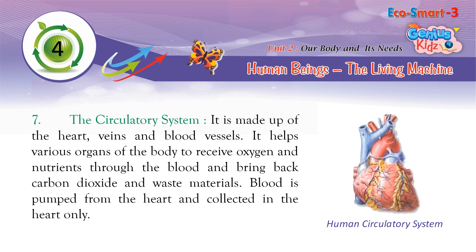The Circulatory System is made up of the heart, veins, and blood vessels. It helps various organs of the body receive oxygen and nutrients through the blood and brings back carbon dioxide and waste materials. Blood is pumped from the heart and collected back in the heart.